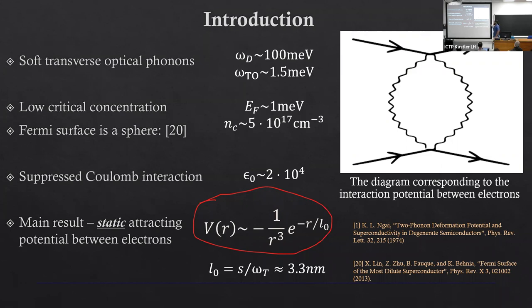We consider such a vertex where the electron interacts with two phonons. We calculated the first term expansion of the free energy and obtained the effective potential of two electron interaction via exchange of two optical phonons. At the most dilute regime, we obtain the static attracting potential between two electrons V(r) ~ (1/r)e^(-r/l0), where l0 = s/ωT ≈ 3.3nm.